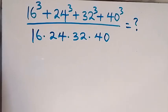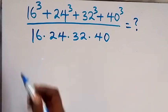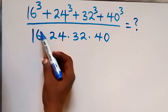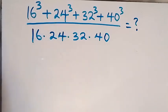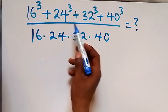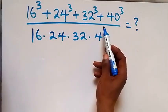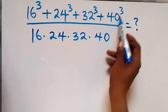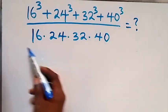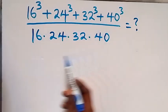Hello, you are welcome here. Let's solve this exponential problem. We have 16 raised to power 3, plus 24 raised to power 3, plus 32 raised to power 3, plus 40 raised to power 3, divided by 16 times 24 times 32 times 40.